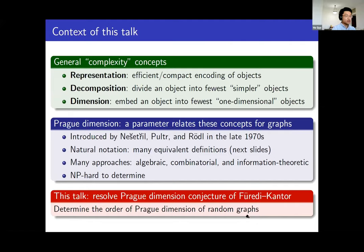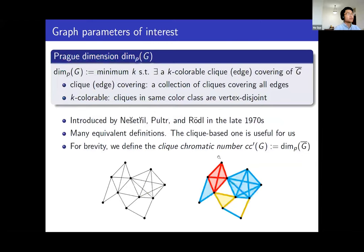Now let's move on to the definition of proc dimension. If you have a graph G, the proc dimension of G is the minimum number K such that there exists a K-colorable clique edge covering of the complement graph of G. A clique covering of a graph is a collection of cliques in the graph that cover all edges of the graph. For example, those colorful cliques form a clique covering because each edge of the graph is covered by at least one clique.